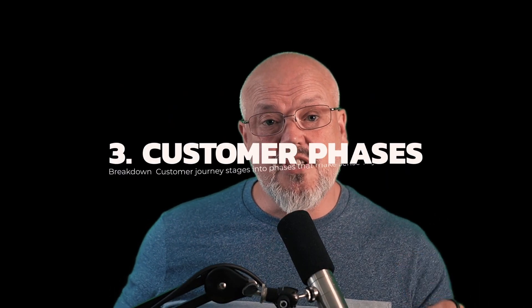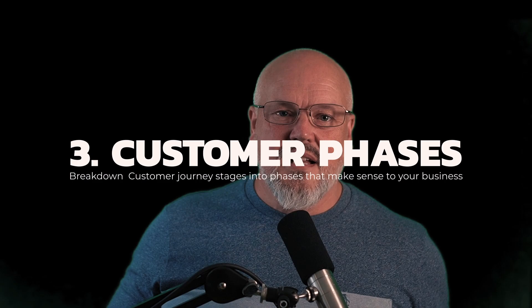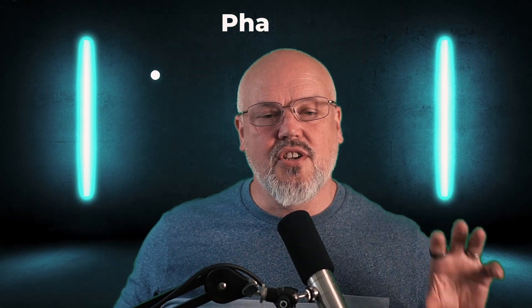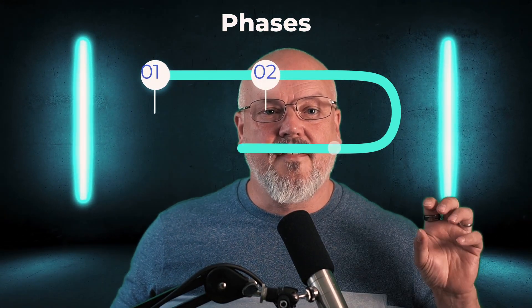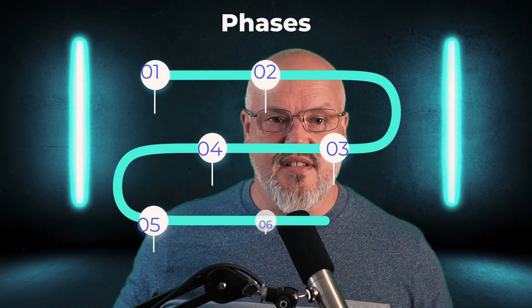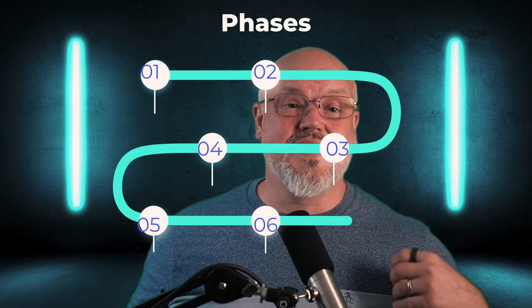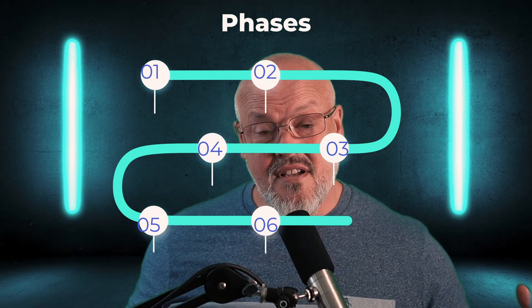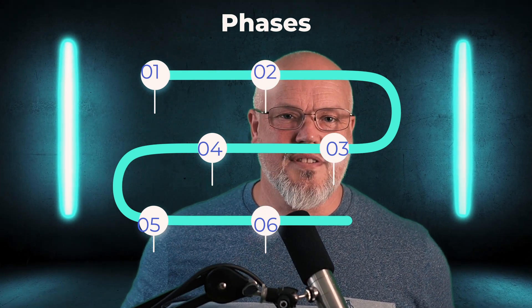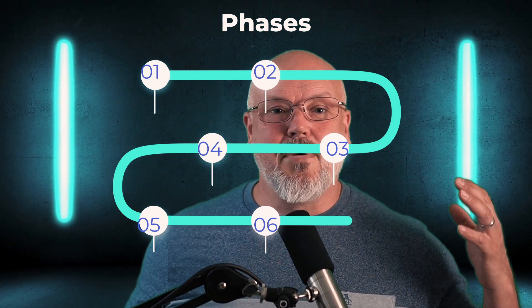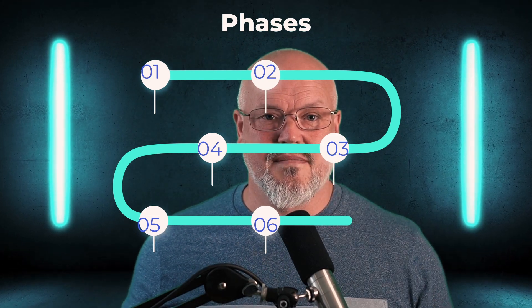Number three: break down your customer journey into phases. Further break down your customer journey stages into phases that make sense for your business — for example, phases dedicated to product discovery, product buying decisions, the checkout process, and post-purchase engagement. Next, identify the touchpoints and interactions in those phases, and also map the underlying systems, business activities, and business goals.